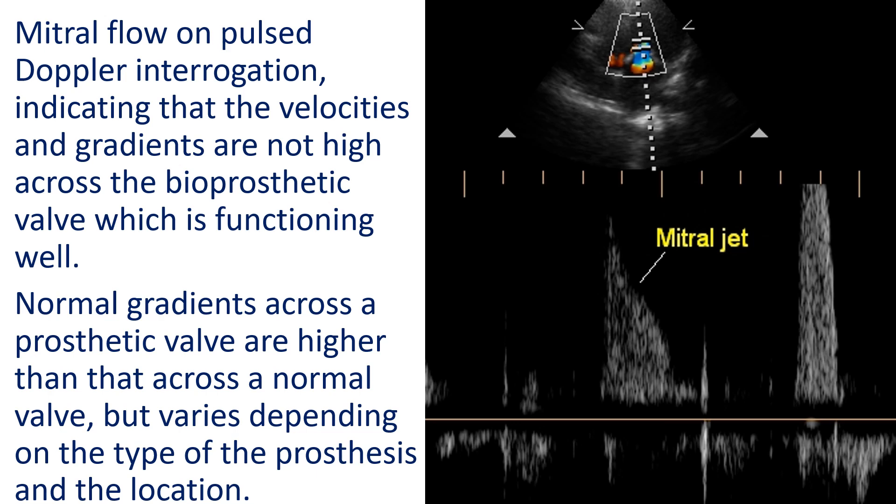Prosthetic valves at the aortic position can have a higher gradient than at the mitral position, basically because of the smaller orifice size and the higher force with which the left ventricle ejects.